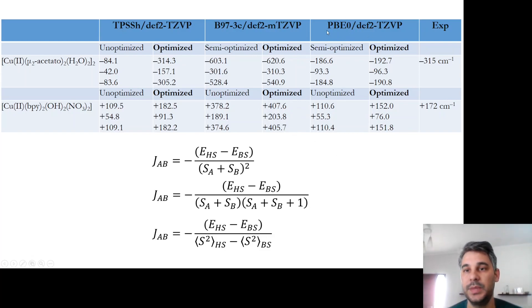Here we have the obtained values for the PBE0 optimized geometry with DEF2 TZBP, which is a hybrid functional. For the semi-optimized structure, we got minus 184, which is around 60-70 percent of the experimental value. And for the geometry-optimized structure, we got a slightly better value of minus 191 reciprocal centimeters, which is again around 60-70 percent of the experimental value. So that is not great, but also not that bad. For the copper bipyridine complex, we got plus 110 for the unoptimized structure, crystal structure, and plus 152 reciprocal centimeters for the optimized geometry. So in this case, is closer. Still, the TPSSH DEF2 TZBP values are clearly better.